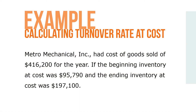Here's an example. Metro Mechanical Incorporated had cost of goods sold of $416,200 for the year. If the beginning inventory at cost was $95,790 and the ending inventory at cost was $197,100, find the average inventory at cost and the inventory turnover at cost rounded to the nearest tenth.